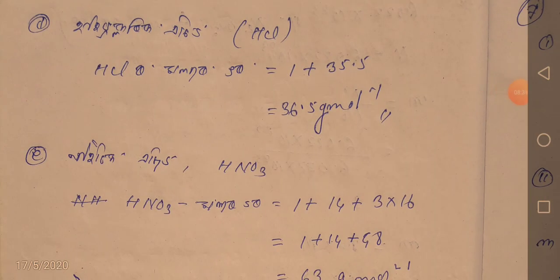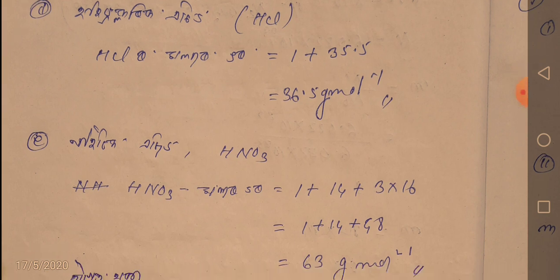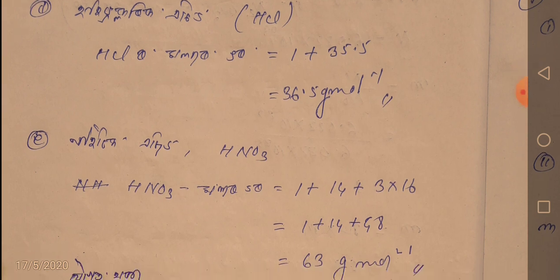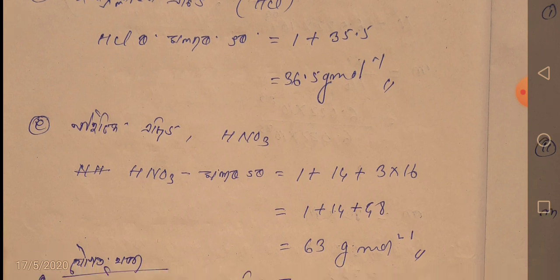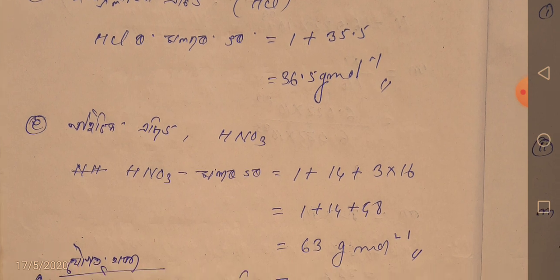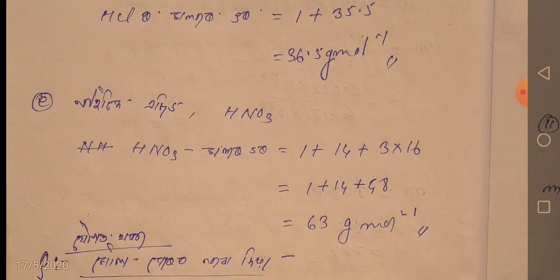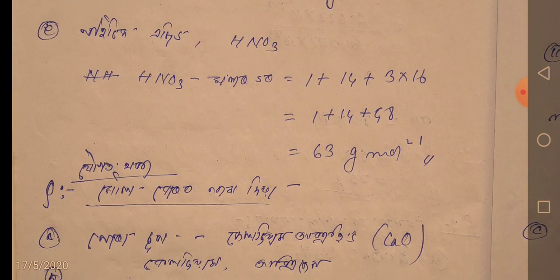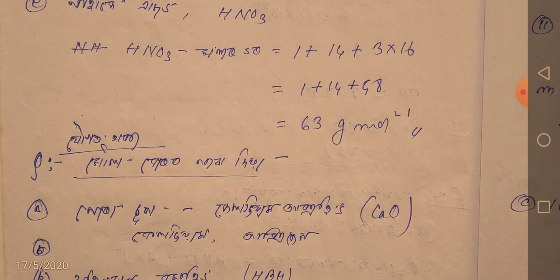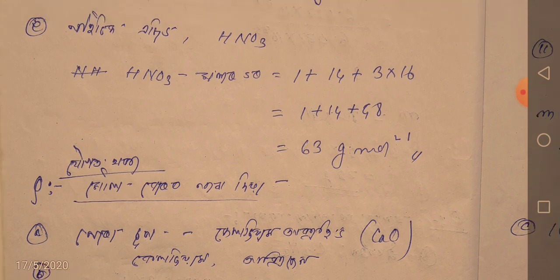The acid is hydrochloric acid. Hydrogen is 1, and chlorine is 35.5 grams per mole, so the total is 36.5 grams per mole. Then the acid is nitric acid — HNO3. Hydrogen is 1, nitrogen is 1, and oxygen is 5 atoms.